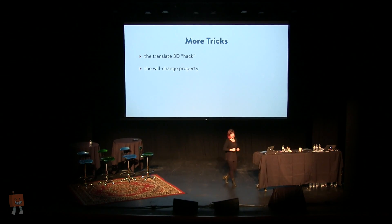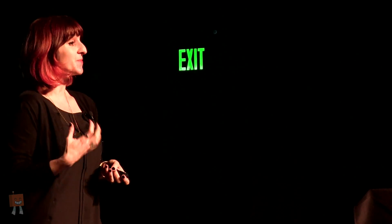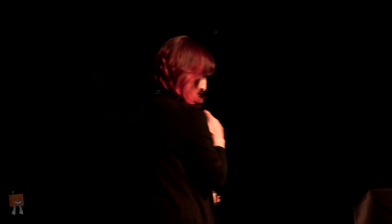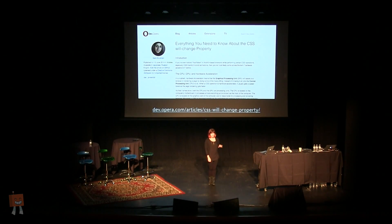There are even more advanced tricks, like the translate3D hack — putting a fake 0% 3D rotation on something to promote it to a new layer and get hardware acceleration. But the will-change property is a new thing you should be using instead, which also gives us more control over what we promote. If you have an animation that's being a little sluggish and it really speaks to your brand or is a core interaction, look at this stuff. Sarah Drasner wrote an article called everything you need to know about the CSS will-change property that you should read.